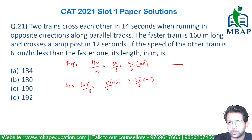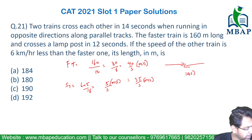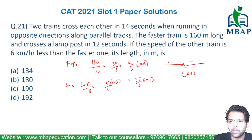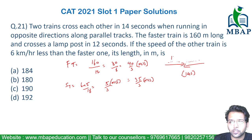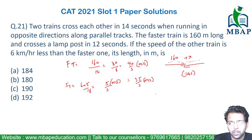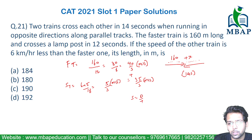Now they are saying the trains are able to cross each other in 14 seconds. When they are crossing each other, they are actually crossing the overall combined length. The length of the faster train is 160 meters. Let's assume the slower train's length is x. We will use the simple concept: speed equals distance upon total time taken. This is the relative speed, which equals total distance upon total time.